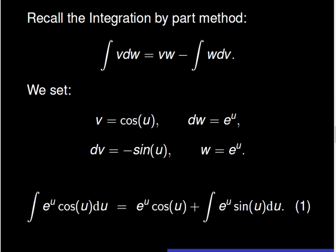Therefore, the integral of exponential of u times cosine of u du is equal to exponential of u times cosine of u plus the integral of exponential of u times sine of u du.